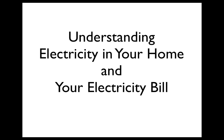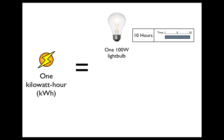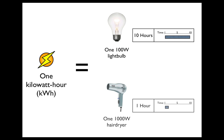Hello, today we're going to take a quick look at electricity use in the home and how to read and interpret an electric bill. Electricity is measured in a unit called a kilowatt hour. One kilowatt hour will run a 100 watt light bulb for 10 hours or a 1,000 watt hair dryer for one hour.